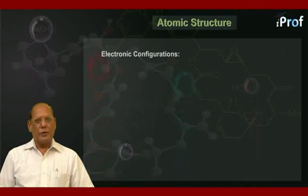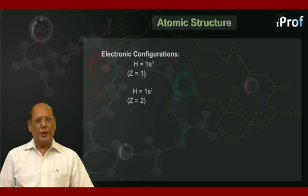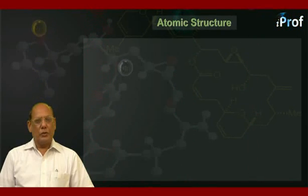So our first element is hydrogen with atomic number 1. Its configuration is 1s¹. Next element is helium, atomic number 2, and the configuration becomes 1s². Then comes lithium, Z equal to 3, with configuration 1s² 2s¹. Then comes beryllium, Z equal to 4, 1s² 2s².